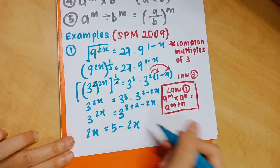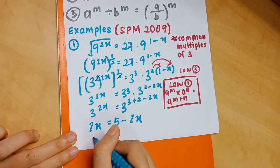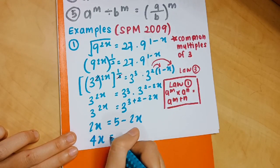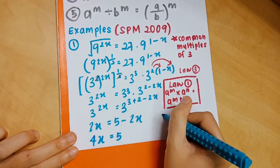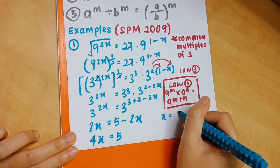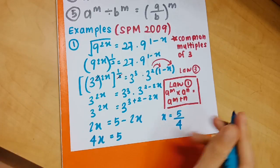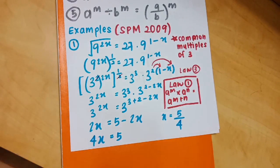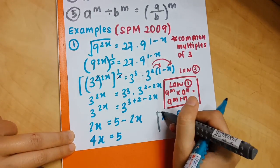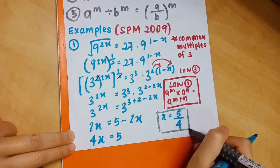Now that the base 3 is the same on both sides, you can compare the exponents directly and easily find that x equals 5 over 4. That is your final answer.